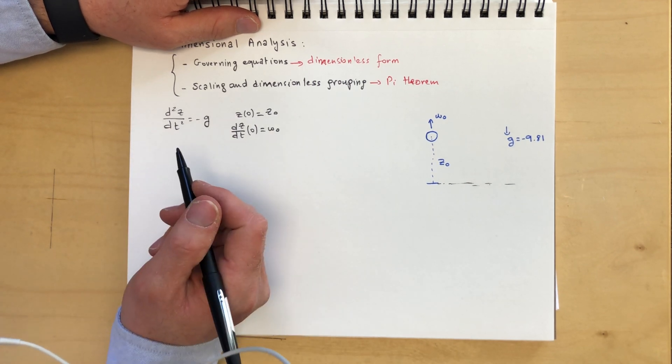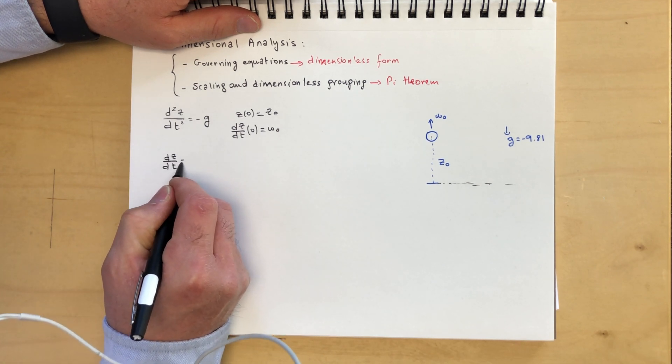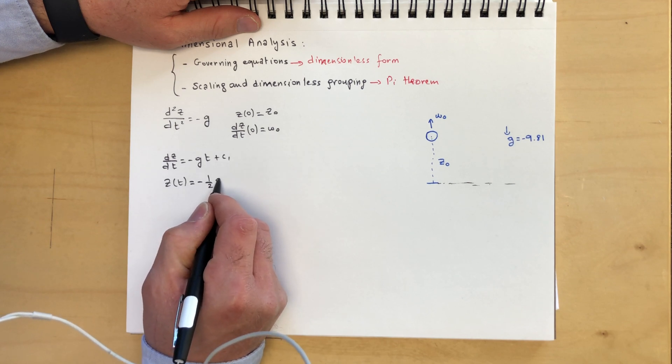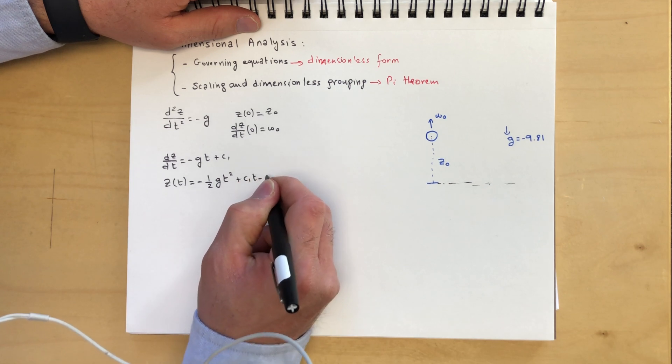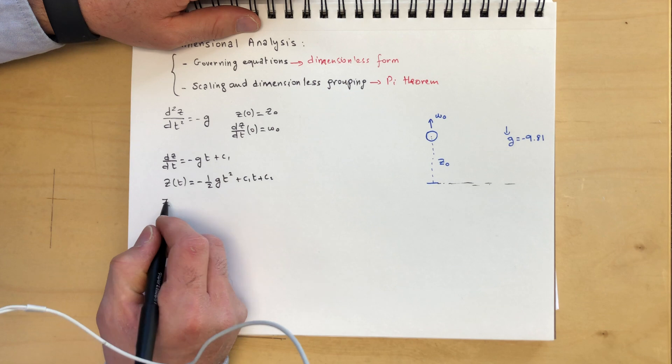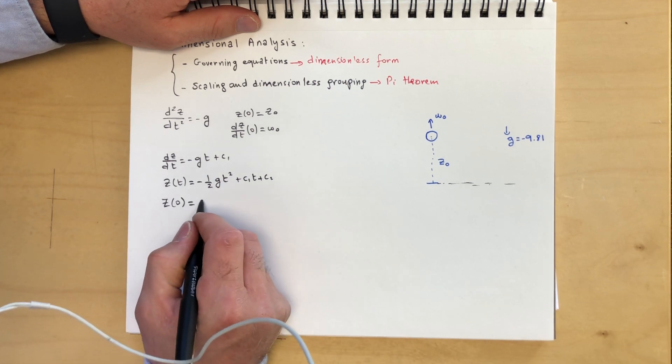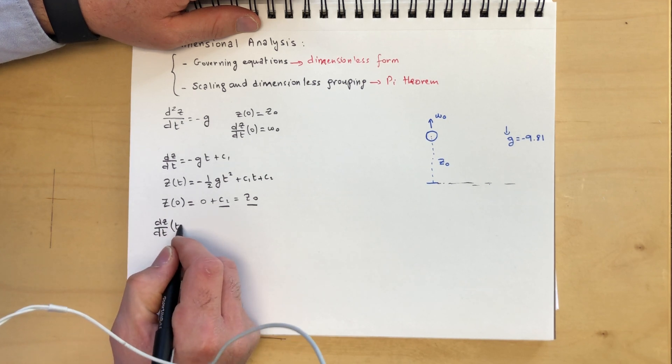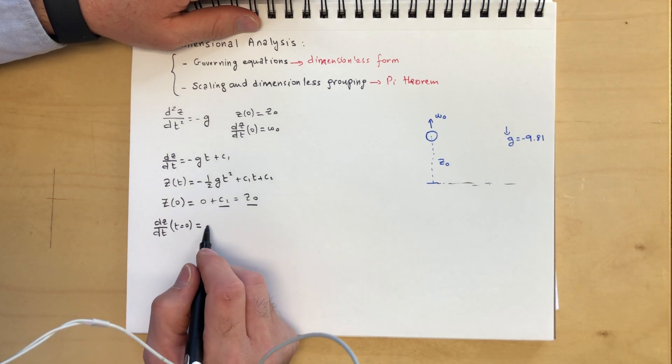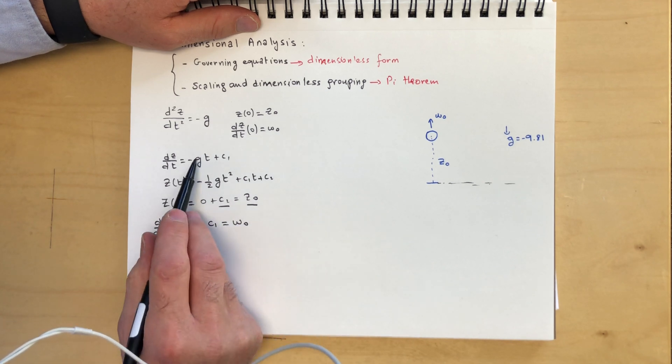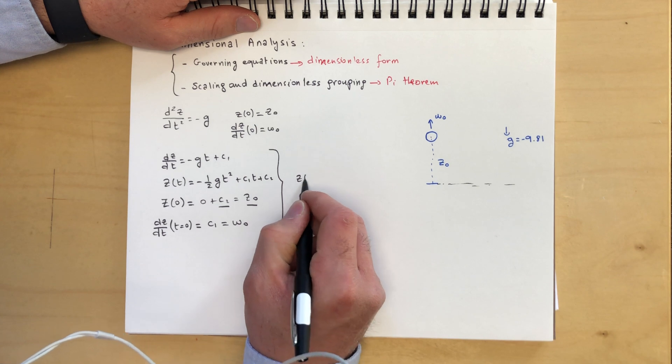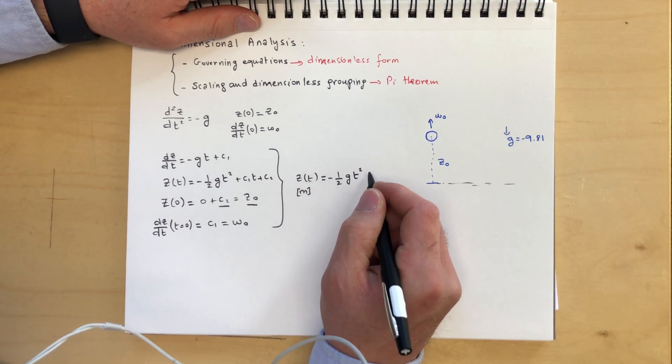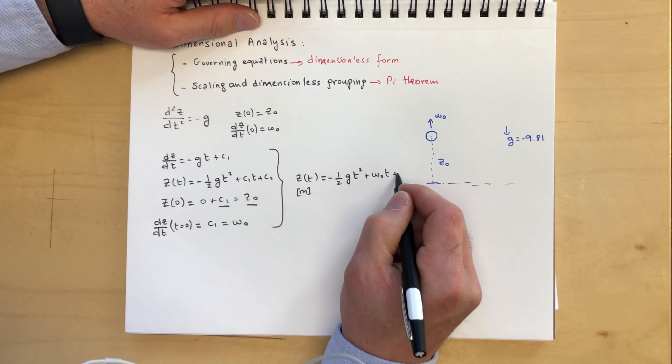Now, by all means, we can solve this exactly. So you do one integration, dz/dt, that gives you minus gt plus c1. And then one more integration, and you get minus 1/2 gt² plus c1t plus c2. And then you apply initial conditions, z0 is equal to z0. So you get 0 here plus c2 is equal to z0. So therefore, c2 is z0. And dz/dt at t equals 0, this gives you minus c1, that's equal to w0, because dz/dt is minus gt. So therefore, the solution, z of t, dimensional, this is in meters, is equal to minus 1/2 gt² plus w0t plus z0.